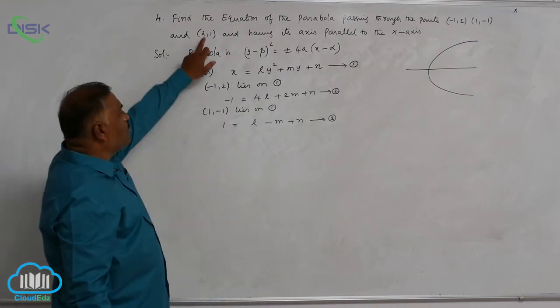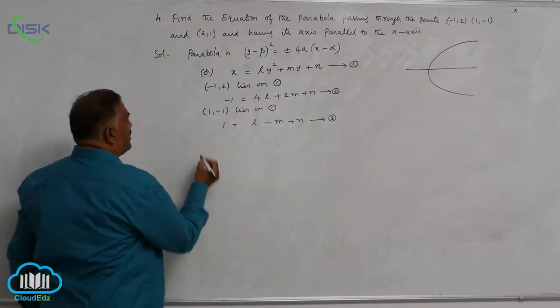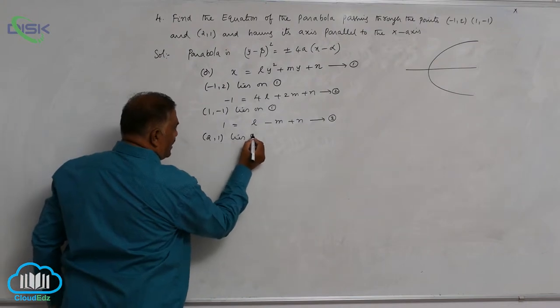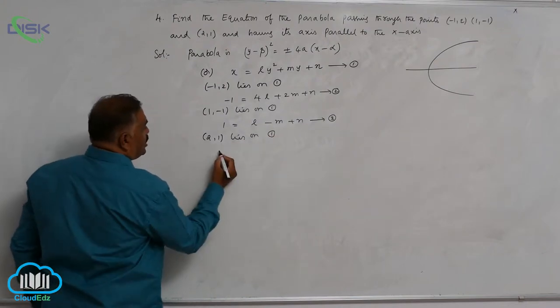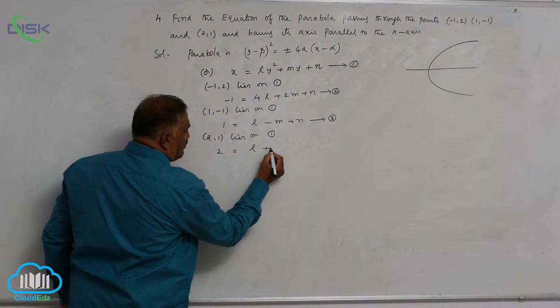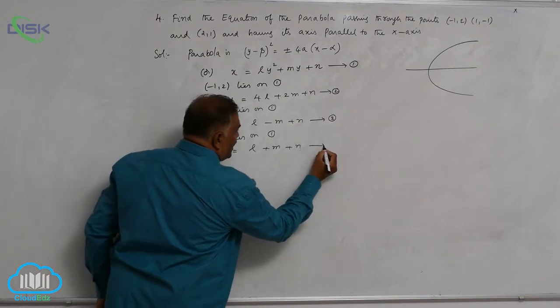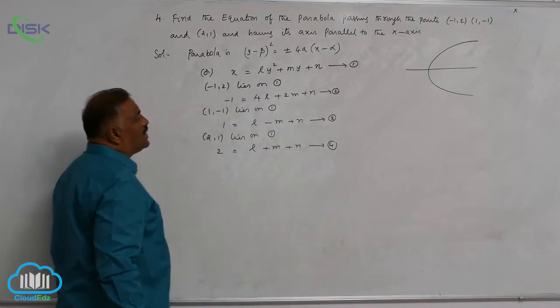Last, (2, 1) lies on equation 1. That is, 2 = l + m + n, equation 4.